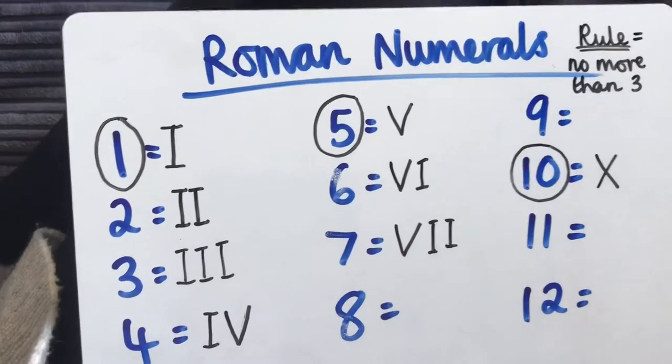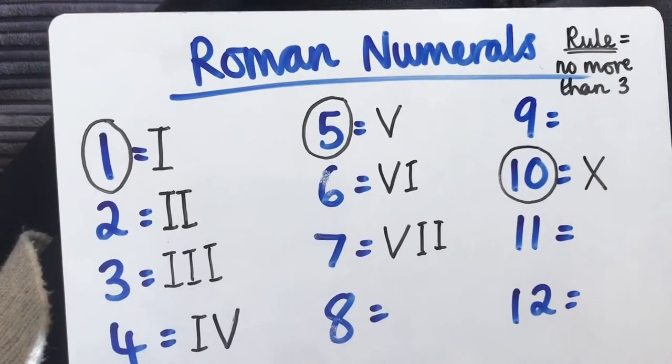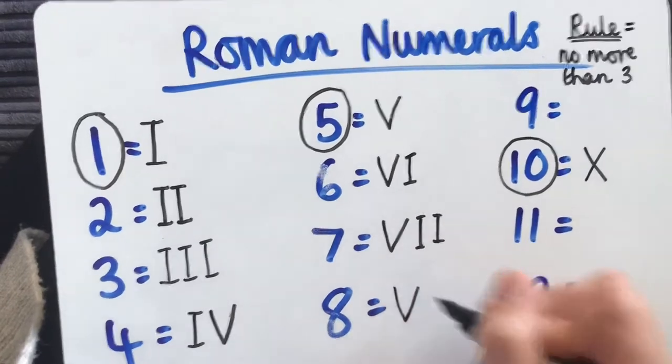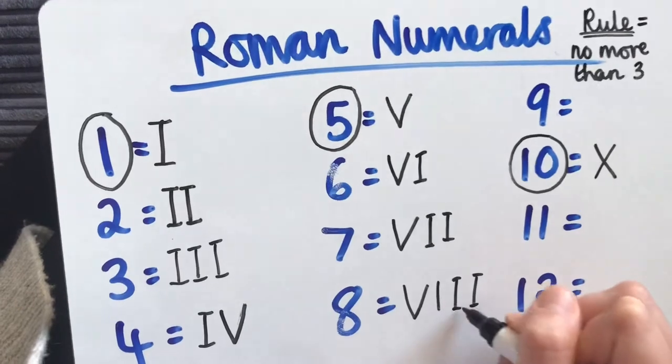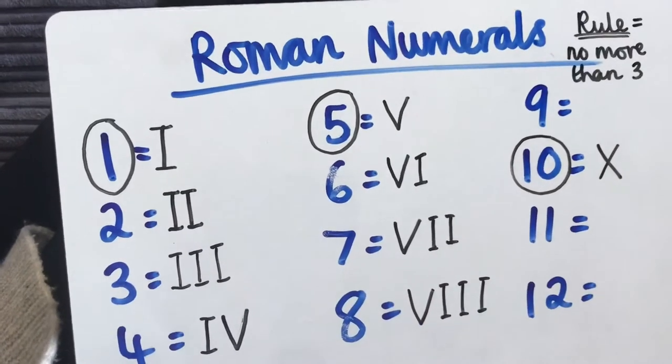Can you think what the number 8 is going to be? V for 5? Six, seven, eight.